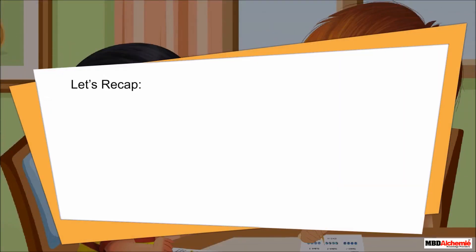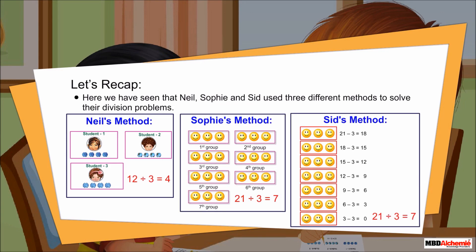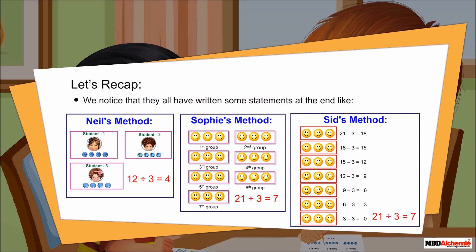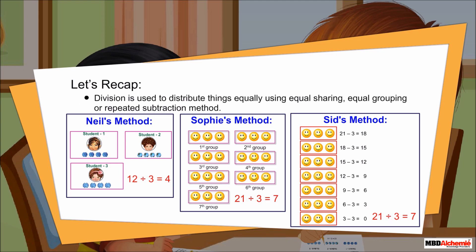Let's recap. Here we have seen that Neil, Sophie, and Sid used three different methods to solve their division problems. We notice that they all wrote some statements at the end, like 12 divided by 3 is equal to 4 and 21 divided by 3 is equal to 7. These are called division sentences. This is the division symbol. Division is used to distribute things equally using equal sharing, equal grouping, or repeated subtraction method.